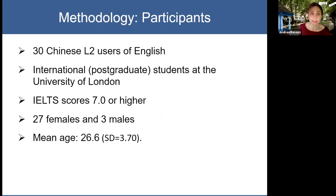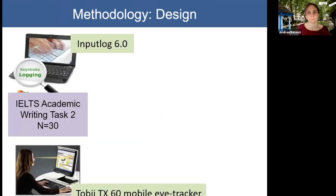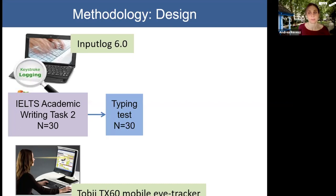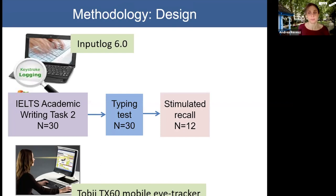Our participants were 30 Chinese second language users of English — international students at the University of London with IELTS scores of 7 or higher. There were 27 females and 3 males, and the mean age was around 27 years. All participants performed one version of the IELTS academic writing task. While writing, their online writing processes were recorded by the keystroke logging software InputLog, and their eye gaze data were collected using a Tobii TX mobile eye tracker.